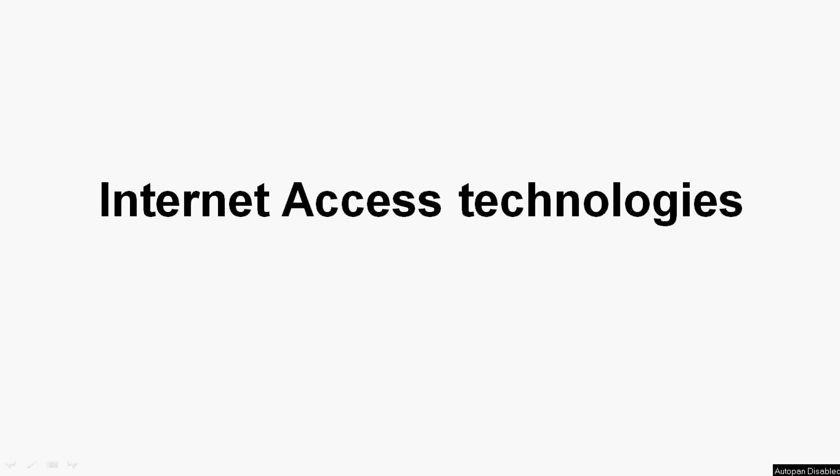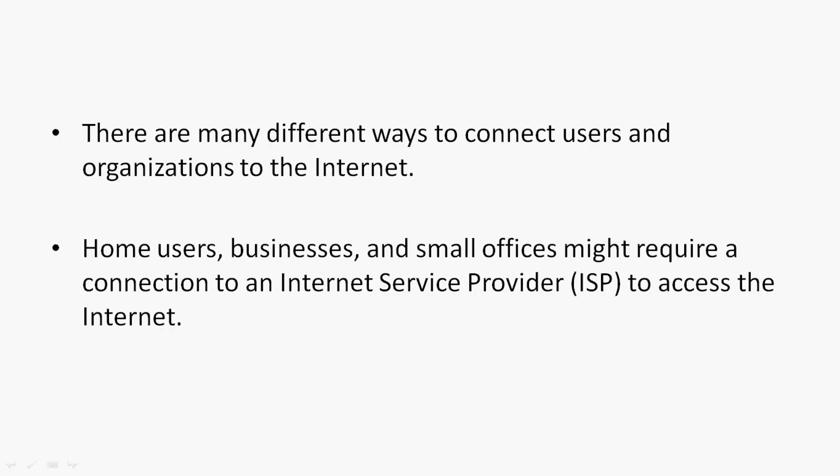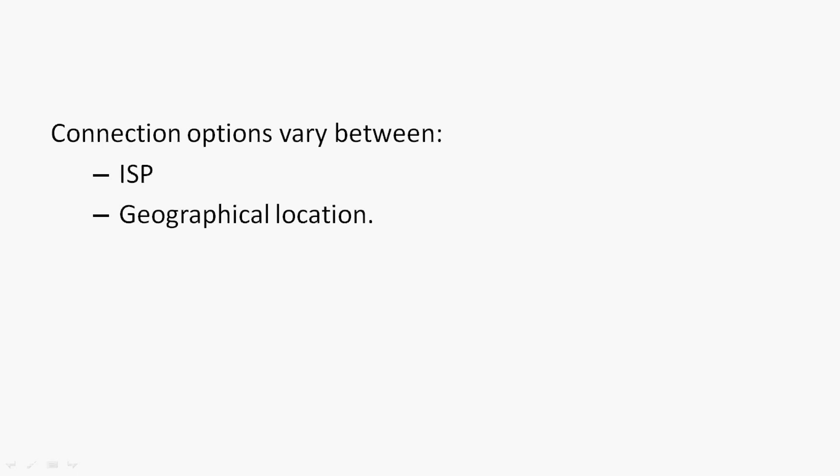Hi friends, in this video we are going to talk about internet access technologies. There are many different ways to connect users and organizations to the internet. Home users, businesses and small offices might require a connection to an internet service provider, that is ISP, to access the internet. These connection options may vary between ISP or geographical location.